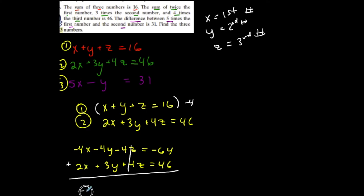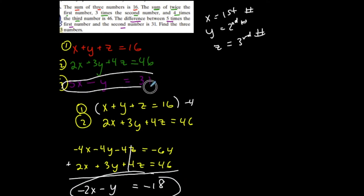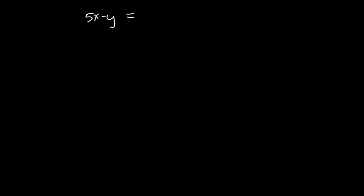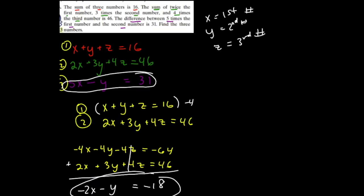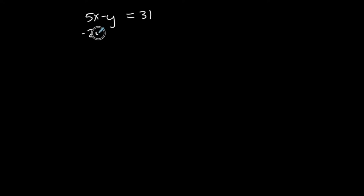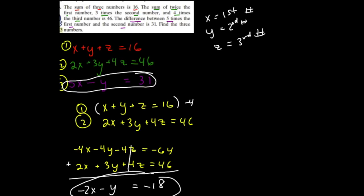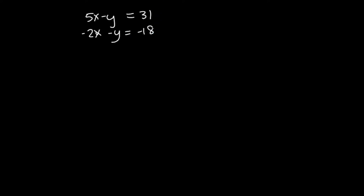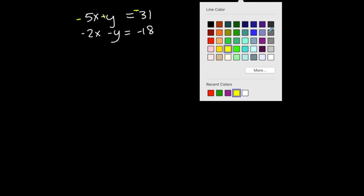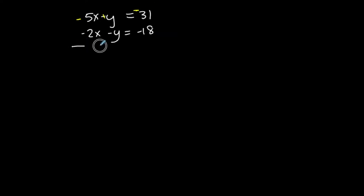Lining up my x's, I get negative 2x minus y equals negative 18. Now I have two equations with just x and y. Bringing it to the next page: 5x minus y equals 31 and negative 2x minus y equals negative 18. I already have opposite signs in front of my y's, so I'm going to make everything in one equation opposite to eliminate y.